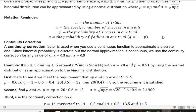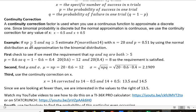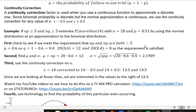Okay, let's look at an example. If np ≥ 5 and nq ≥ 5, estimate the probability of more than 14 with n = 20 and p = 0.6, using the normal distribution as an approximation to the binomial distribution. First check to see if we meet the requirement, so n times p, n is 20, and p is 0.6.